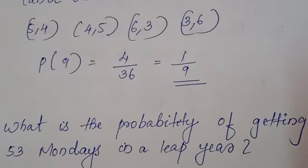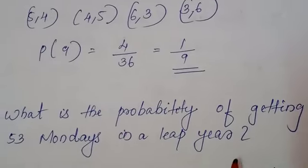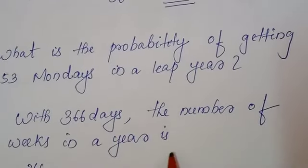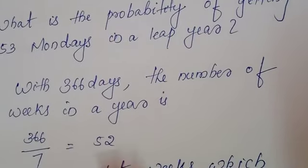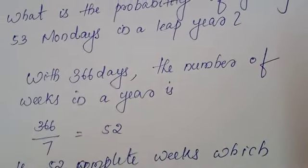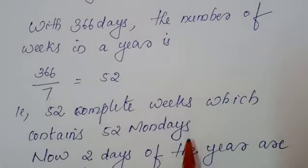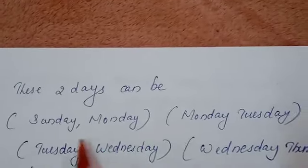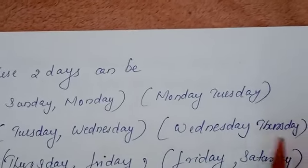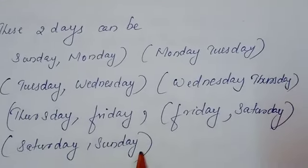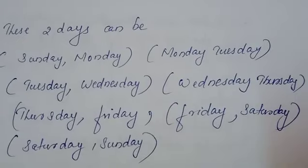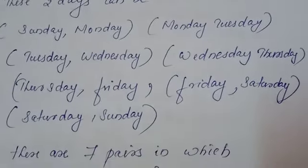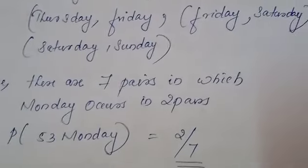Next one, what is the probability of getting 53 Mondays in a leap year? As you all know, leap year has 366 days. The number of weeks in the year is 366 divided by 7 and we will get the answer 52. That is 52 complete weeks in which contain 52 Mondays. Now, 2 days of the year are remaining. These 2 days can be Sunday, Monday or Monday, Tuesday, Tuesday, Wednesday, Wednesday, Thursday, Thursday, Friday, Friday, Saturday, Saturday or Sunday. So, there are how many pairs are there? There are 7 pairs which Monday occurs in 2 pairs. So, P of 53 Mondays equals 2 by 7. This is the final answer.